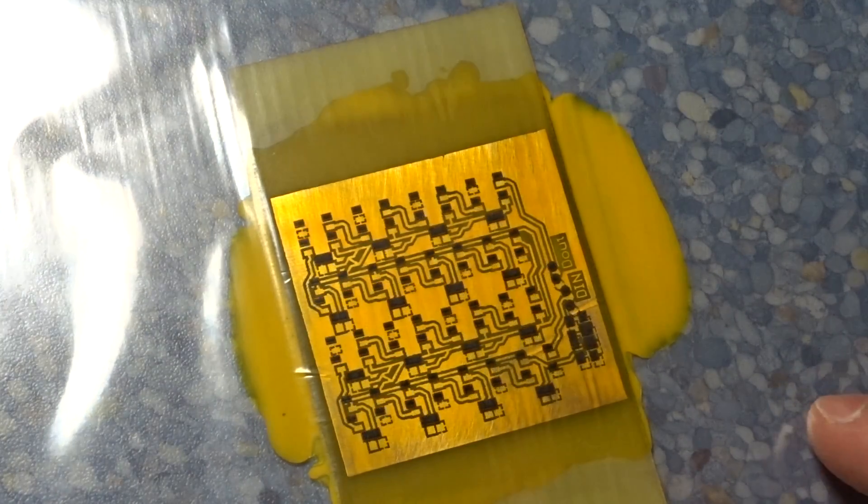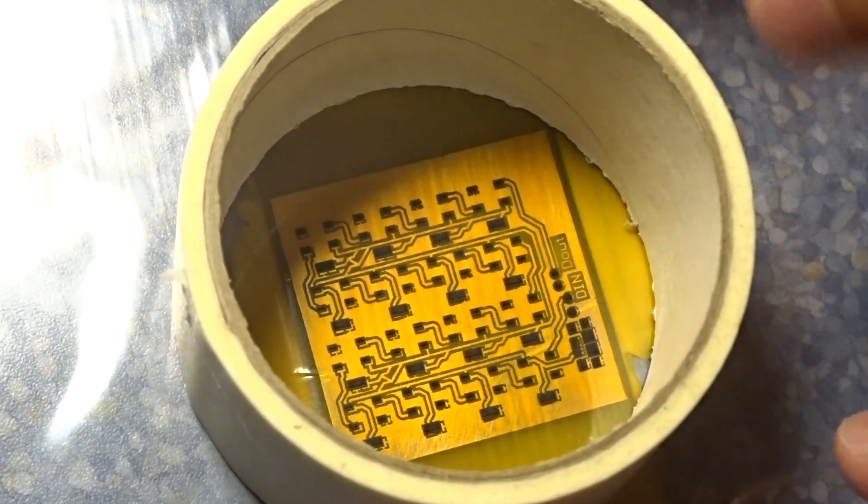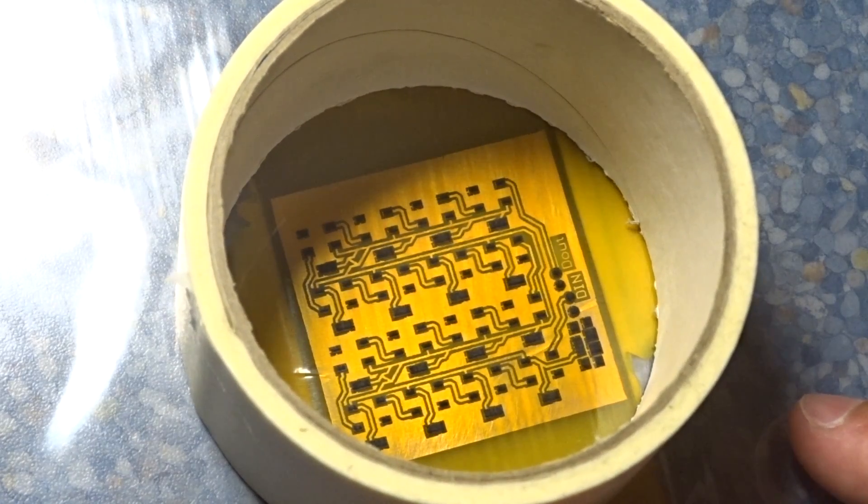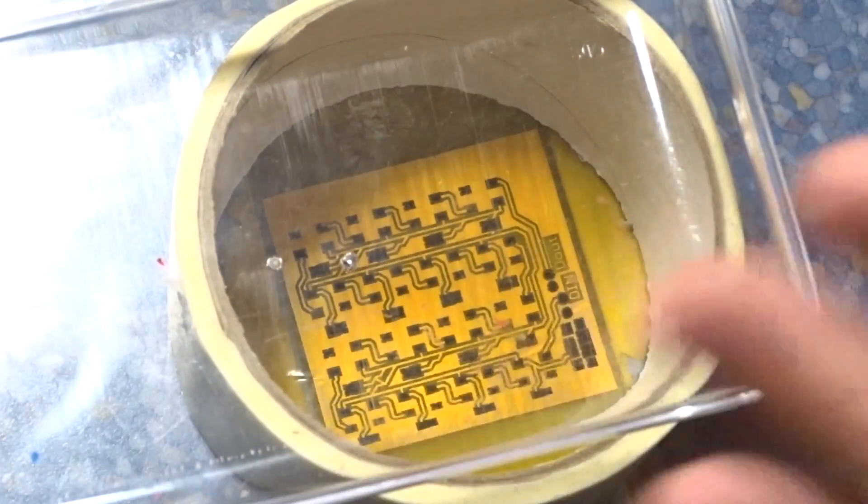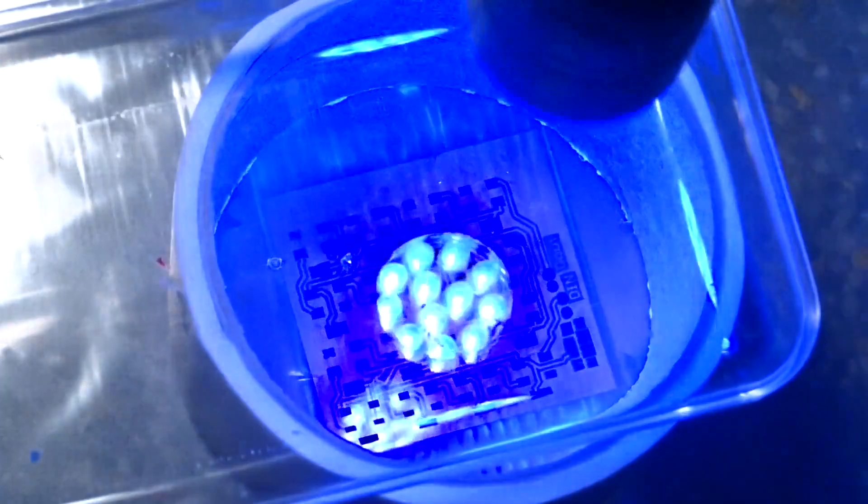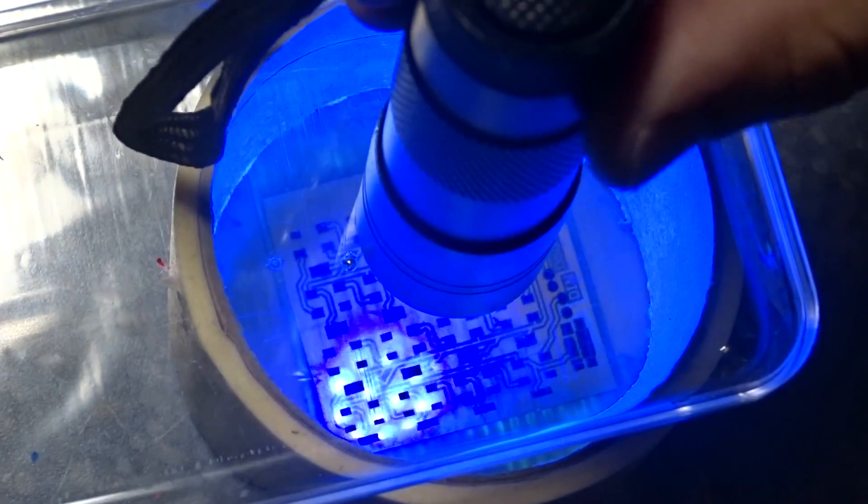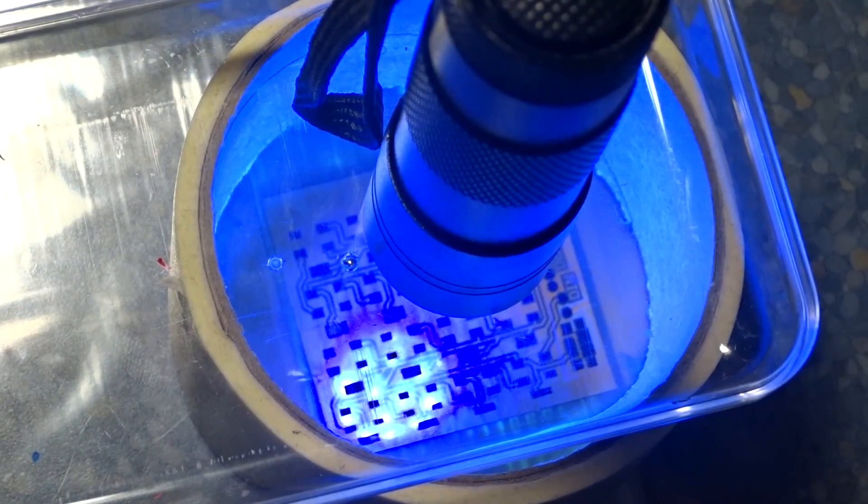Before using UV light I prepared a sheet of transparent paper with solder pads printed on it and aligned it with the design. By doing this I am protecting the pads from UV light and not letting it cure. Now set the timer for about 40 or 60 seconds and place UV light on top of it.